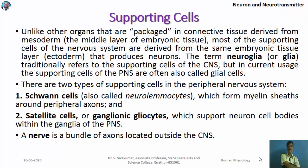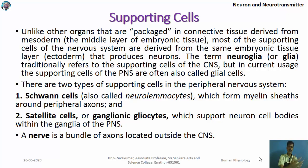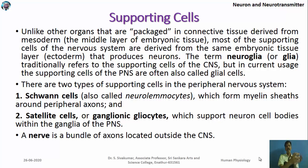For a nerve cell to function, it requires support from other cells called supporting cells. In the peripheral nervous system, the two important supporting cells are Schwann cells and satellite cells. Schwann cells are present along the axon and provide the myelin sheath to neurons. Satellite cells are ganglionic gliocytes that support neuron cell bodies within the ganglia of the peripheral nervous system.